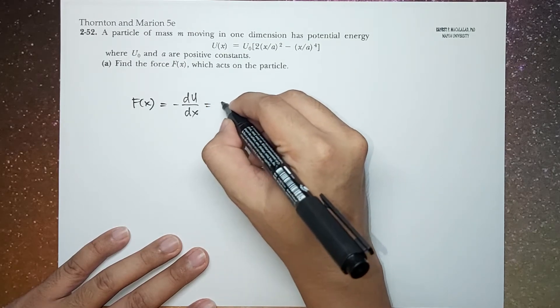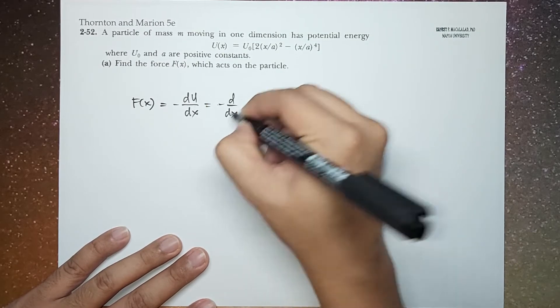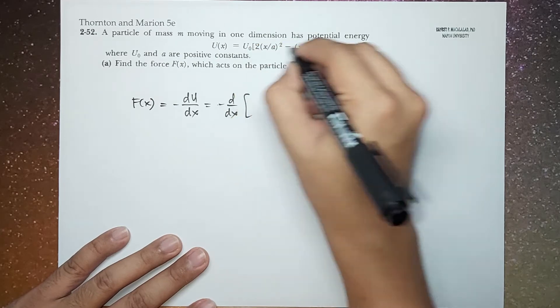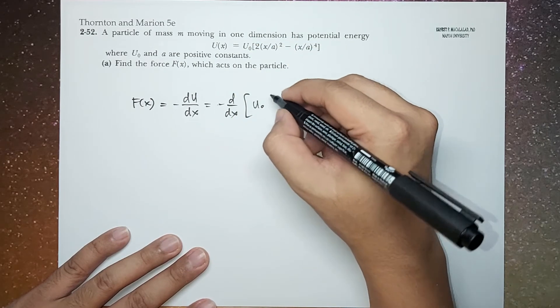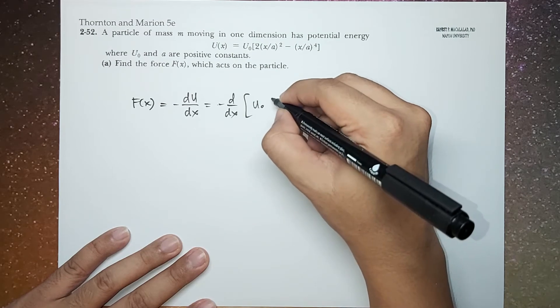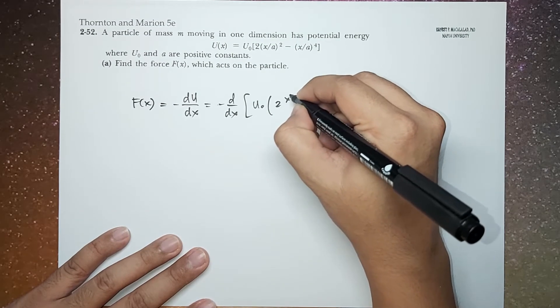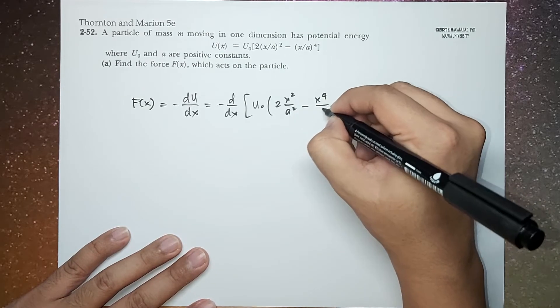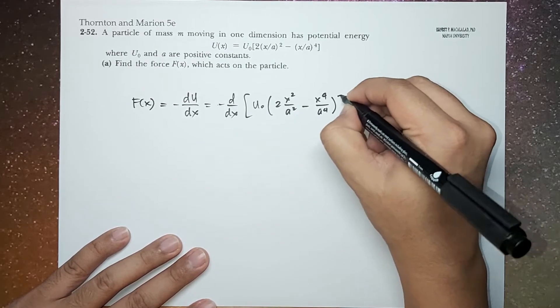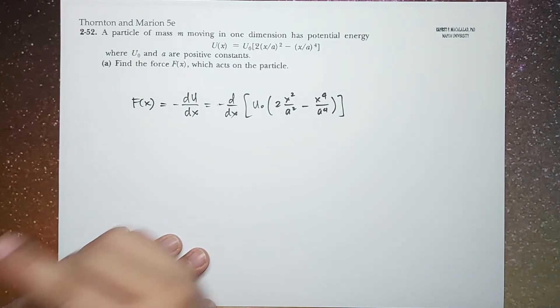Which is now equal to negative derivative with respect to X of this function. So this is U0 times (2*X^2/A^2 - X^4/A^4).